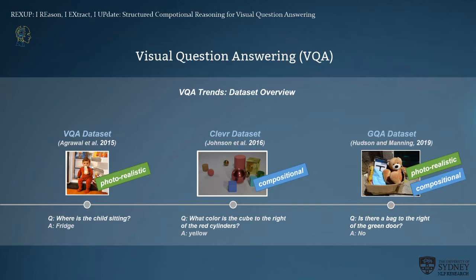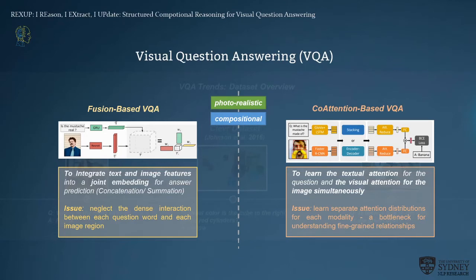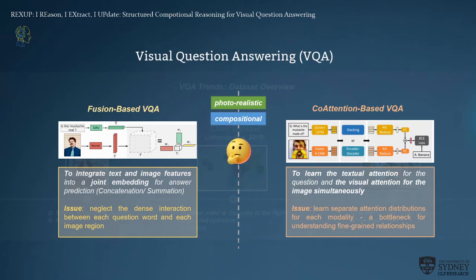Can we solve this problem with existing VQA models? The existing VQA models can be classified into two main streams: vision-based and co-attention-based. Vision-based models combine image and text features into joint embeddings using concatenation or summation. Co-attention-based models learn textual attention for the question and visual attention for the images. But none of them can successfully solve tasks combining photorealistic images with computational questions, because they ignore the importance of dense interaction and semantic reasoning of multimodality — vision and language.